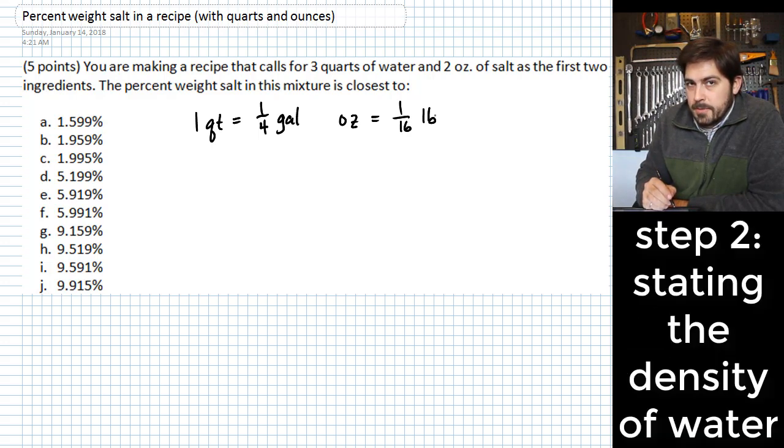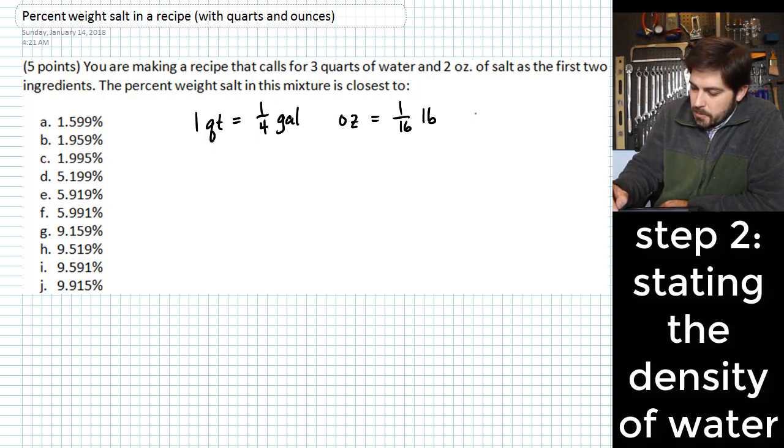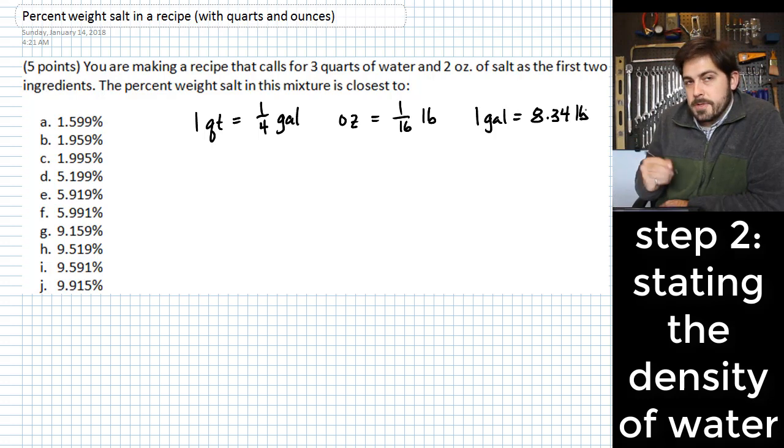And then lastly we're going to need to know the density of water and one way that we can express the density of water is with a number of pounds per gallon. And so over here I'll say that one gallon is going to be equal to 8.34 pounds of water. And that would be the weight of one gallon of water. So these are the things that we need to know for this problem.